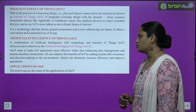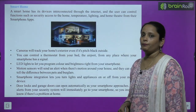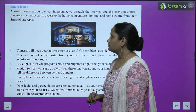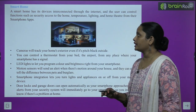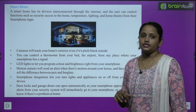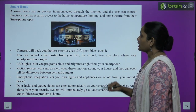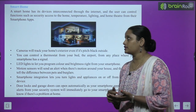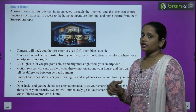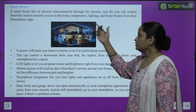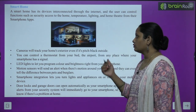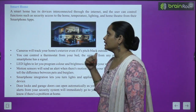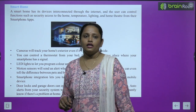Next is applications of AIoT — कौन-कौन से applications use किये जाते हैं AIoT में। पहला आता है हमारा smart home — इसमें बहुत सारे interconnected devices दिखेंगी जो internet से connected होती हैं। User इन functions को control कर सकता है — जैसे security को अपने phone से connect कर सकता है, घर का temperature connect कर सकता है, lighting control कर सकता है, या home theater को smartphone app से connect कर सकता है।